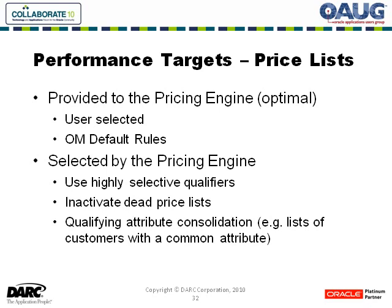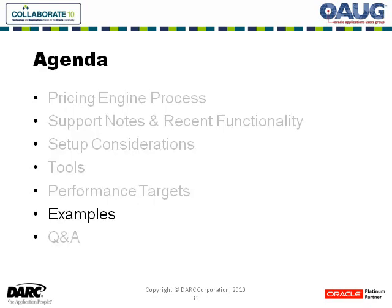We definitely want to inactivate any dead price lists that are out there. We also want to make sure that we're using our qualifiers properly. Going back to the example I used before of lists of customers, replace those with some type of qualifying attribute, making sure we have redundant conditions removed. Those are the things we can look at from the standpoint of how we're actually using the pricing attributes, qualifiers, and modifiers.